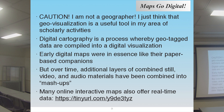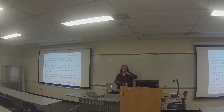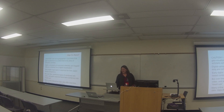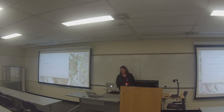Digital cartography, as a basic definition, is a process whereby geotagged data can be compiled into some kind of data visualization. Early digital maps were much like their paper-based companions — think of road atlases. But over time, digital geovisualization allows multiple geospatial layers to be layered on top of each other, and you can also add elements such as audio, video, real-time information, or still images. Those combinations are often called mashups in online mapping.